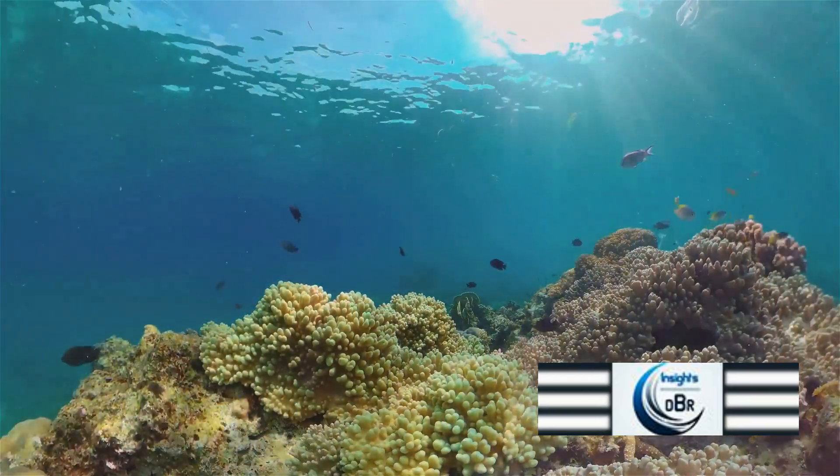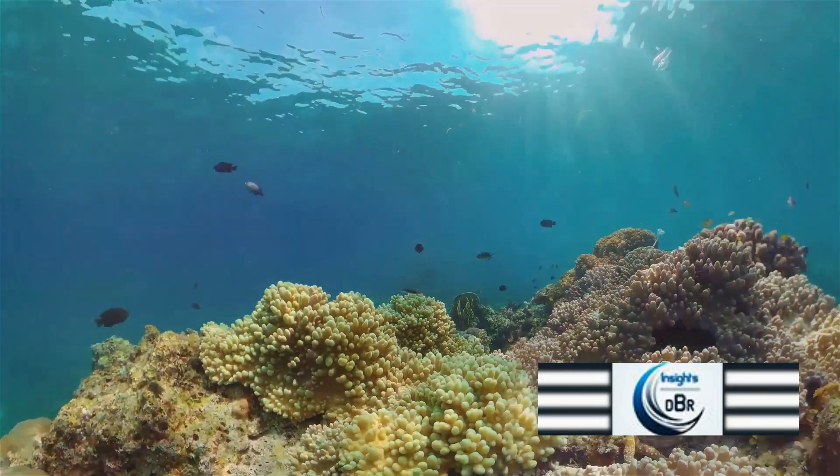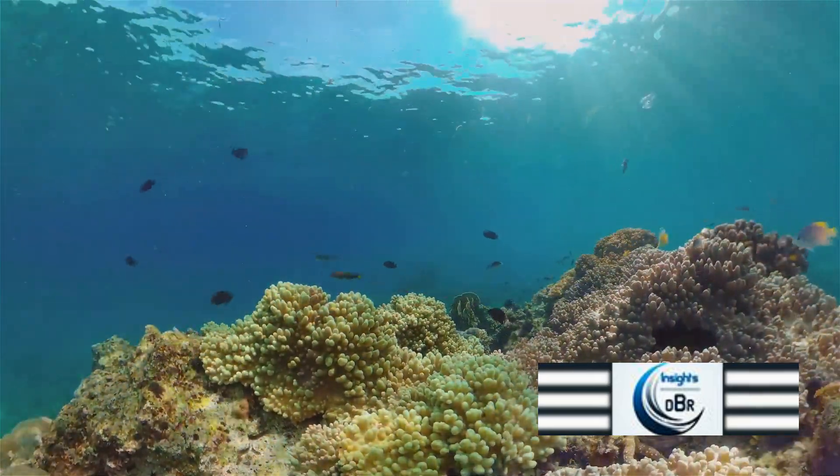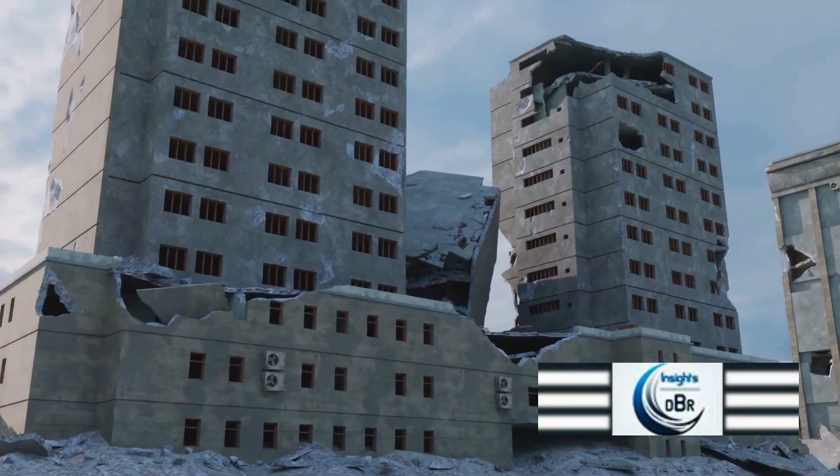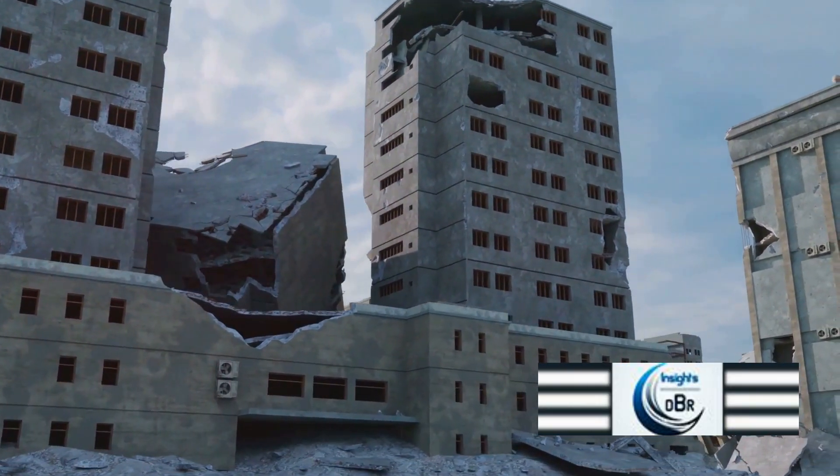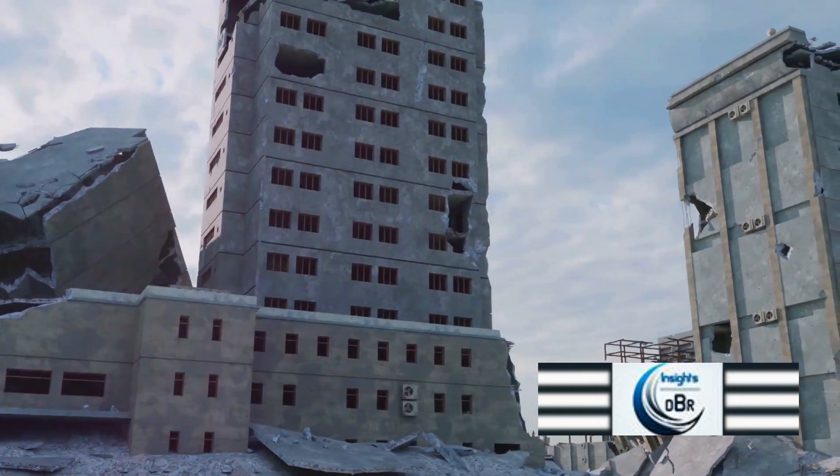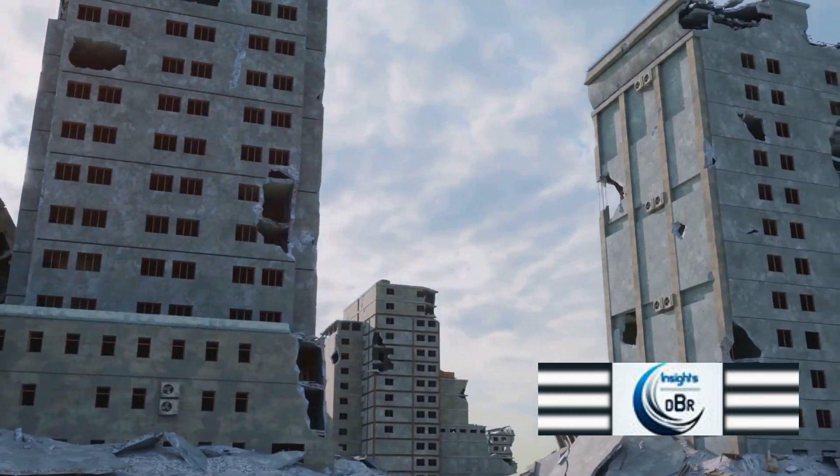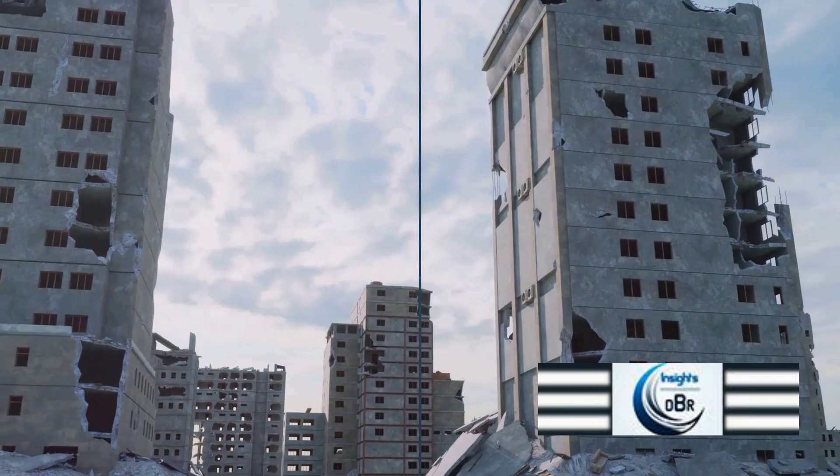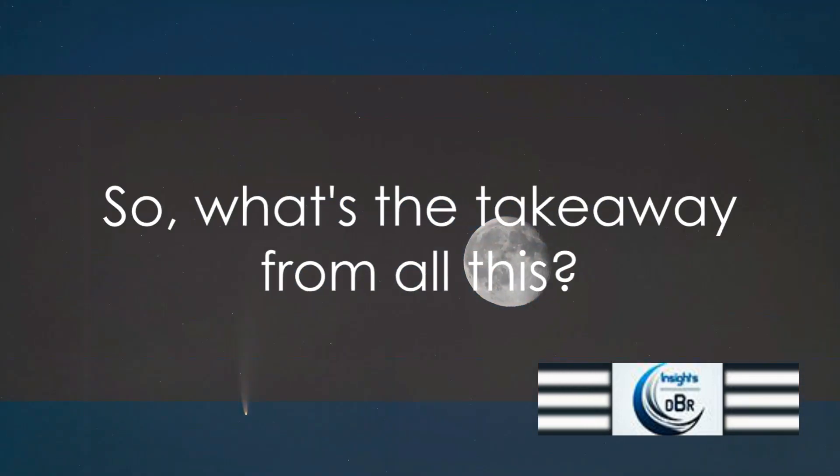Survival in the aftermath of such a catastrophe would depend on adaptability and resilience. The world as we know it would be irrevocably altered, and the path to recovery would be long and arduous. The aftermath of a comet strike would undoubtedly be a challenging time for life on Earth. So, what's the takeaway from all this?